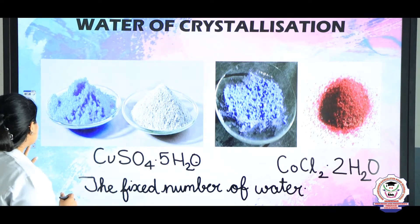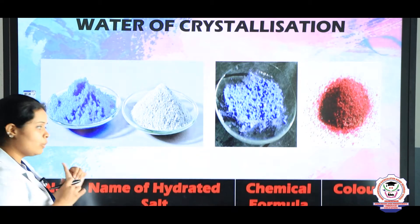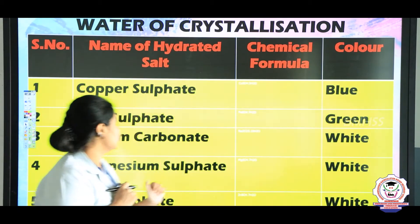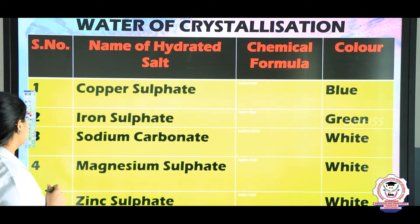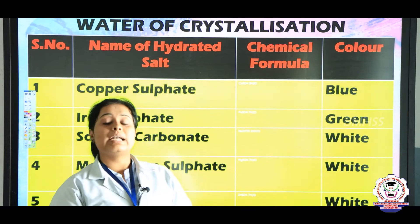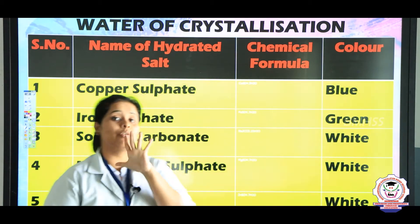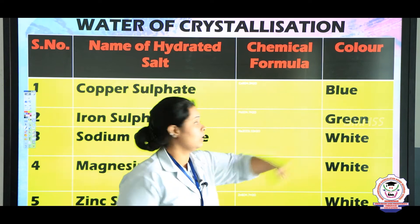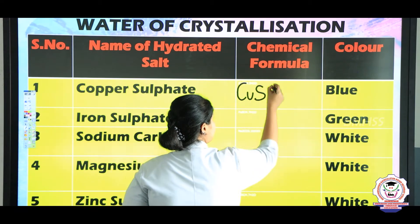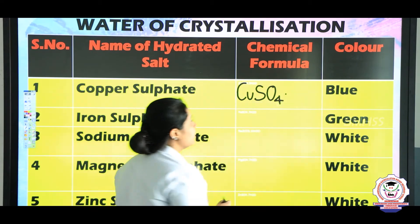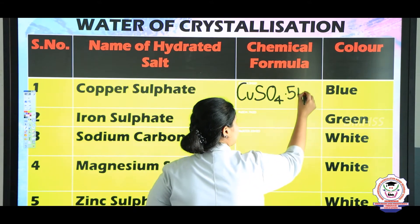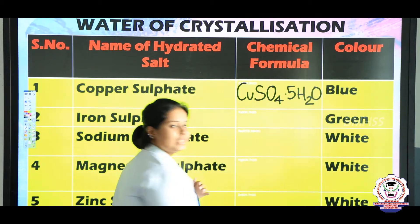Now let us see other examples of water of crystallization. There are various examples. The first one is copper sulphate — I have already told that it contains five molecules of water and it will be blue in colour. The formula is CuSO4·5H2O and the colour is blue. The second example is iron sulphate. Iron means Fe and sulphate means SO4. Iron sulphate has seven molecules of water: FeSO4·7H2O.